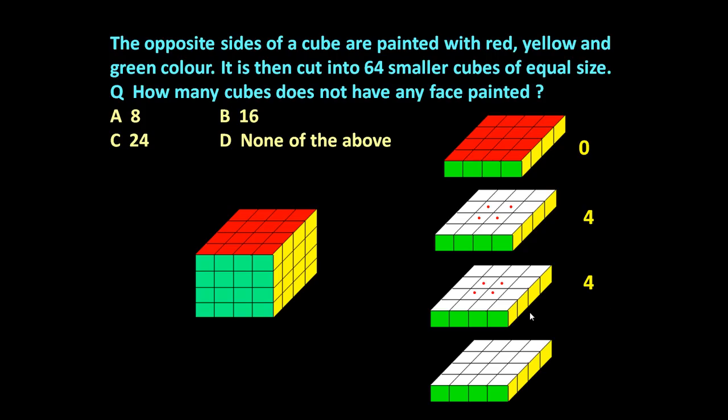And slice number 3 also, it will produce 4 such cubes. And last slice, bottom side is red. If you see first and last, they are similar. Bottom is red. This yellow, another side yellow. This green, another side also green. So it will produce 0 such cubes.